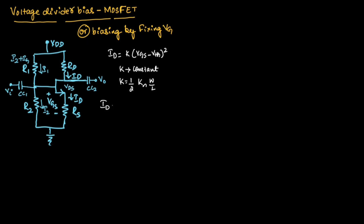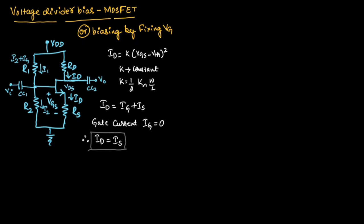Here drain current is also written as IG plus IS, so drain current will be equal to gate current plus source current. Here gate current IG will be assumed to be 0. Therefore, ID will be equal to IS. That is why across the source terminal, instead of writing IS, we have written it as ID itself, because theoretically we assume gate current as 0, since practically gate current will be very very small.